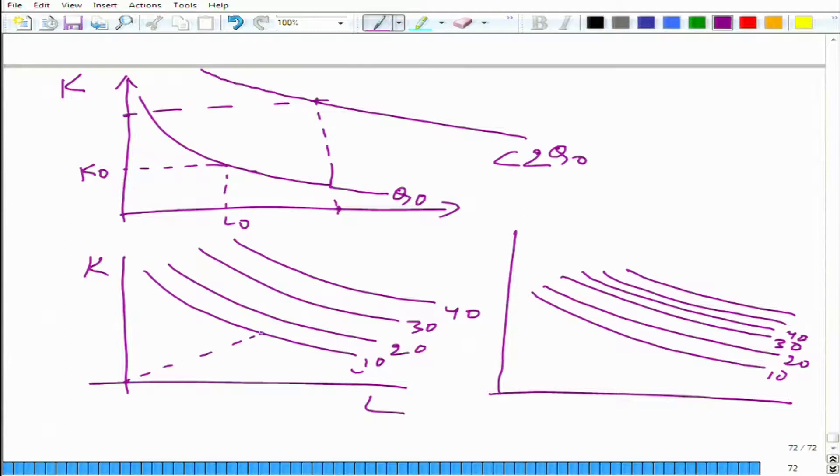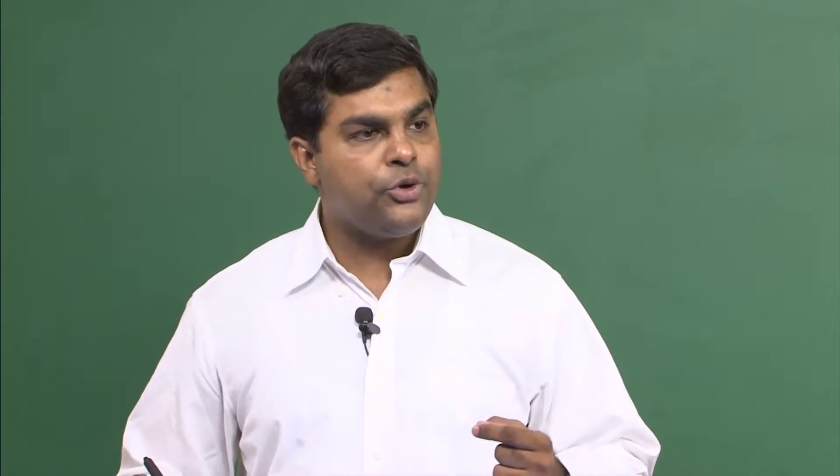We need to double when we reach here for constant return to scale, but with increasing return to scale, if we double, what will we get? We will get more than 20. But if we want to draw the isoquant for 20, we need to increase the capital and labor by less than the double amount.